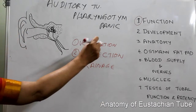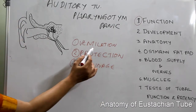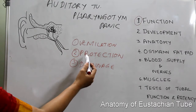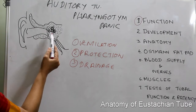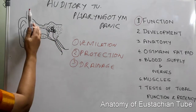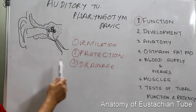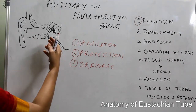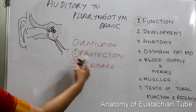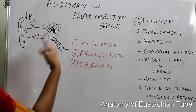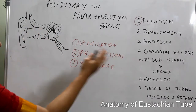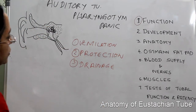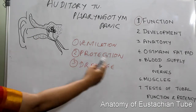To summarize the functions: it ventilates and regulates pressure within the middle ear; it provides protection of the middle ear from nasopharyngeal secretions and sound pressure; and third, it provides drainage of middle ear secretions into the nasopharynx. The mucociliary action is directed towards the nasopharynx, so mucosecretions from the middle ear go into the nasopharynx.